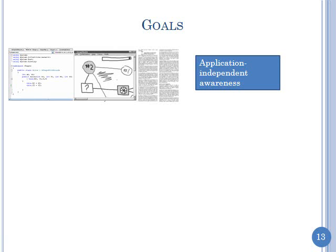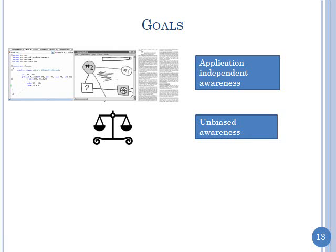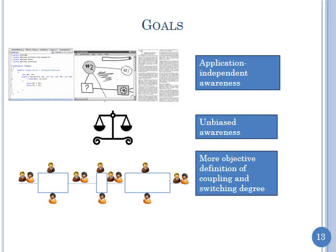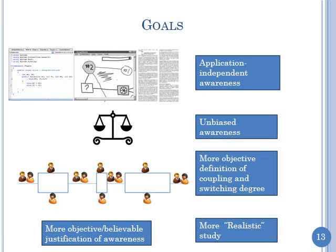The goals of this work were: an awareness mechanism that is application independent, working for software development, whiteboards, and document creation; a mechanism that provides unbiased awareness so there's equal chance for each kind of work; a more objective definition of coupling and switching degree; and a more realistic study. Meeting all these goals would provide a more objective and believable justification for awareness mechanisms.